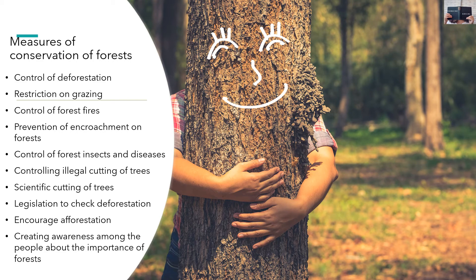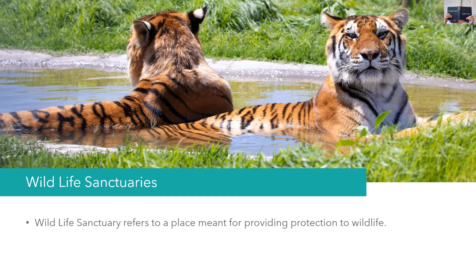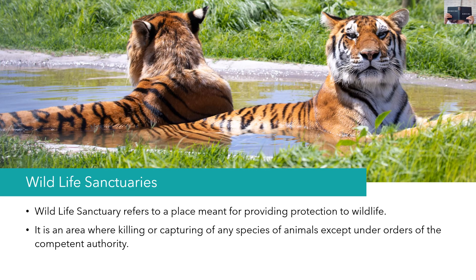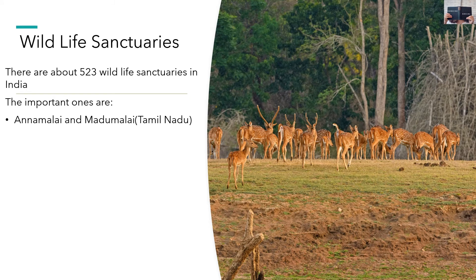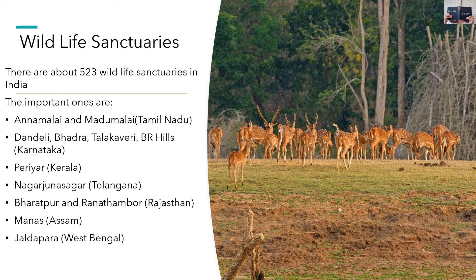Wildlife Sanctuaries: A wildlife sanctuary is an area where animal habitats and their surroundings are protected from any sort of disturbance. It refers to a place meant for providing protection to wildlife — capturing, killing, and poaching of animals is strictly prohibited. Their main aim is to provide a comfortable living to endangered animals. There are about 523 wildlife sanctuaries in India. Important ones include Annamalai and Mudumalai in Tamil Nadu, Dandeli, Bhadra, Thalakaveri, and BR Hills in Karnataka, Periyar in Kerala, Nagarjuna Sagar in Telangana, Bharatpur and Ranthambore in Rajasthan, Manas in Assam, and Jaldapara in West Bengal.